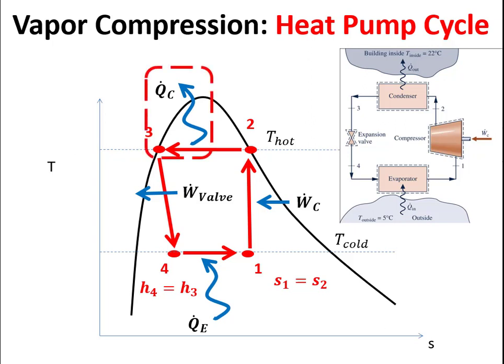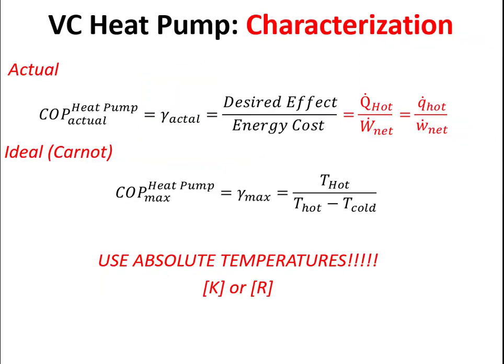Because this is a heat pump cycle, our energy benefit is the energy that's transferred from the condenser to the hot side of our system. If we're looking at characterizing this particular cycle, we talk about coefficients of performance because they're greater than 1, so they're not efficiencies. But it's still the desired energy effect divided by the energy cost. In this case, Q hot over W dot net.